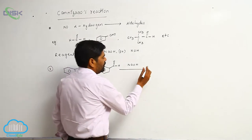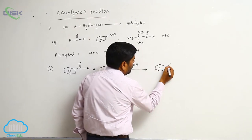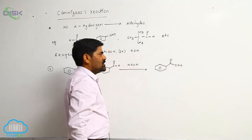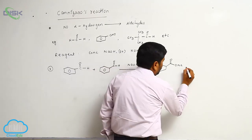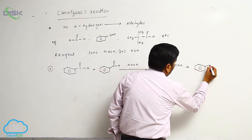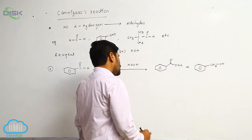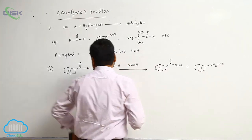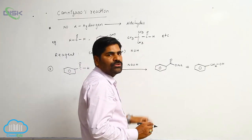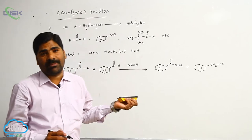One mole is oxidized to form sodium benzoate, and the other mole is reduced to form benzyl alcohol. So oxidation and reduction simultaneously take place in this chemical reaction.